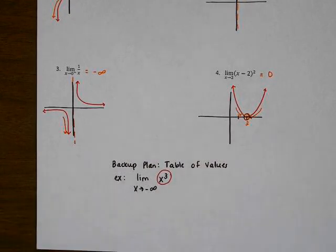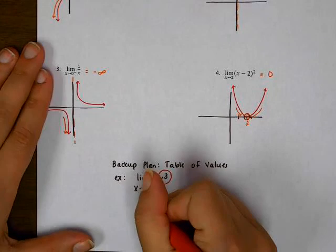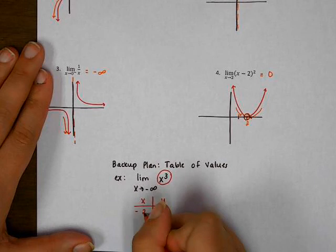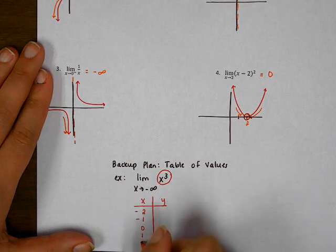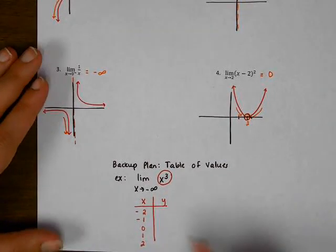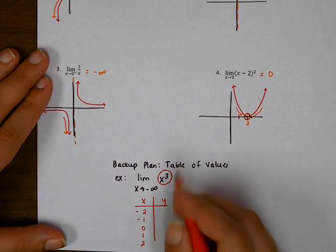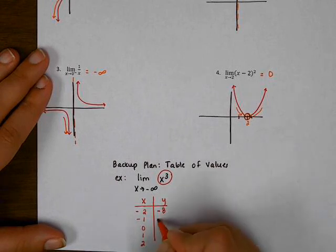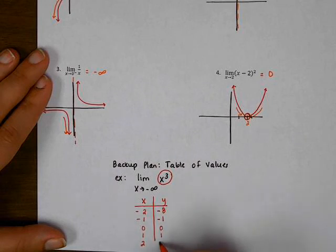What we could do is start by making an xy table and plugging in some values. If I plug negative two into this equation I get negative eight. If I plug in negative one I get negative one, zero gives me zero, one, and then eight.